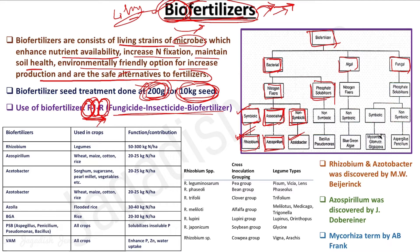Phosphorus-solubilizing biofertilizers are mostly non-symbiotic; examples are Bacillus and Pseudomonas. These bacteria can mobilize or solubilize phosphorus that is fixed in the soil. Algae that act as biofertilizer are non-symbiotic nitrogen fixers — that is Blue Green Algae (BGA).